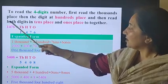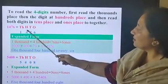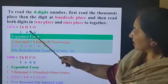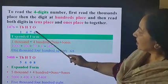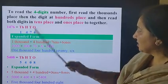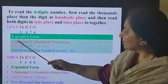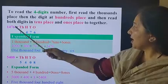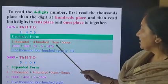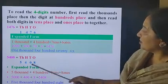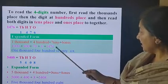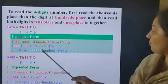We have 1000 here; we will write 1 under 1000's. In 100's place, we have 400; we will write 4 under 100's. In 10's place, we have 7 tens; we will write 7 under 10's. And in 1's place, we have 6; we will write 6 under 1's. Now look at the expanded form: 1000 plus 400 plus 70 plus 6 is equal to 1476. We read this number as 1476.